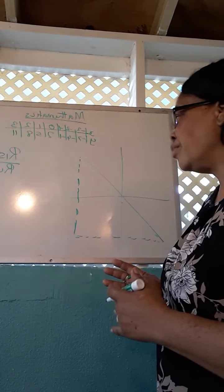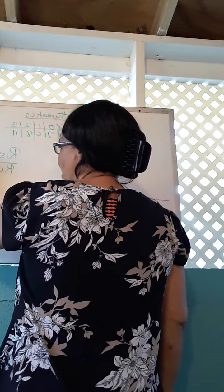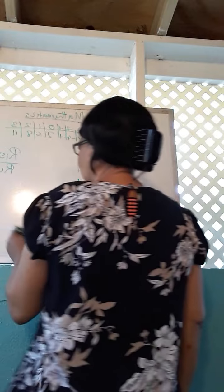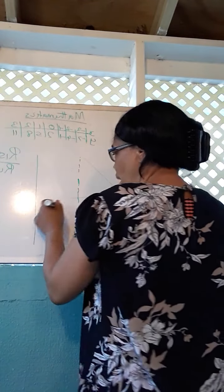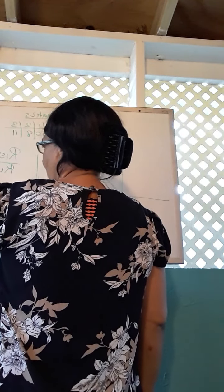Now what do I mean by rise over run? So you'll get the problem: calculate the gradient of this graph. My rise over run. My rise is my y-axis. That's my y-axis. And my run is my x-axis.